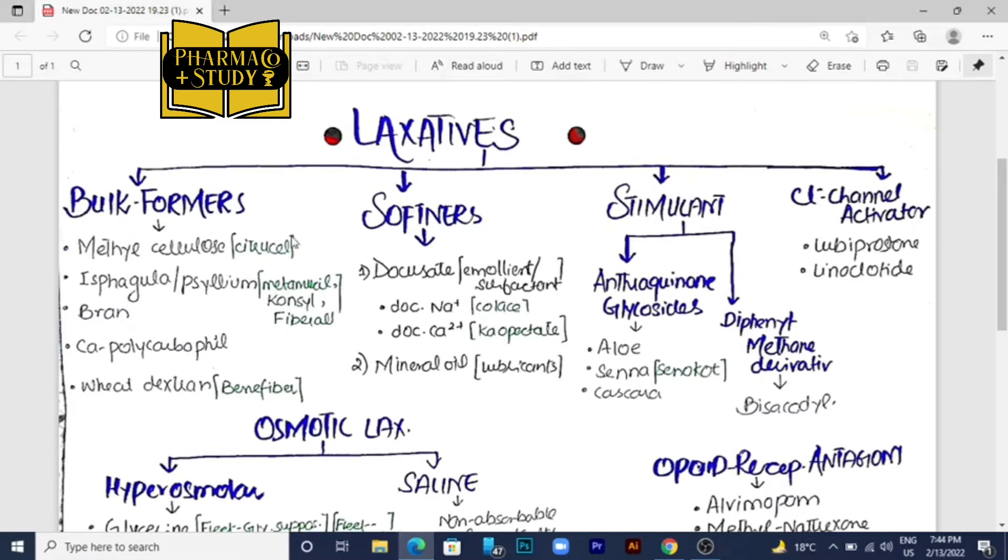Methylcellulose comes under the brand name citrocell. Then isophagol, also known as xylem, comes under the brand name metamucil, consyle or febrile. Then comes bran and calcium polycarbophyll, and the other one is v-dextron which comes under the name benifiber in the market.